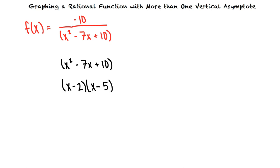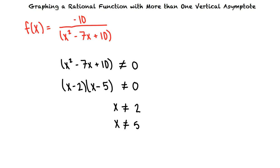That's right. Since we know that the denominator cannot equal 0, we see that x cannot equal 2 or 5. This means that there are two vertical asymptotes at the lines x equals 2 and x equals 5.